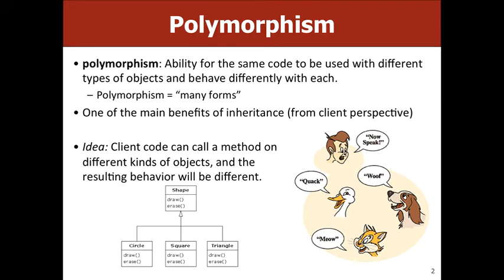The other reason, and probably one of the better reasons for inheritance, is that clients can treat two objects that are a little bit different in the same way. You can have a bunch of different animals and order each of them to speak — each might quack or woof based on whether they're a duck or a dog. The client doesn't need to know if they're dealing with a dog or a duck; they just know it's some kind of animal. This is polymorphism — from the Greek 'poly' meaning many and 'morph' meaning form. You can run the same code on different objects and get different behavior.